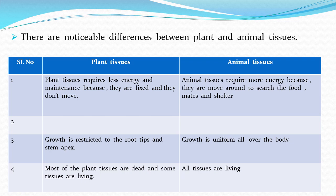Plant tissues require less cell energy and maintenance compared to animal tissues. This is because plants are fixed to one position and do not move. Growth in plants is restricted only to the roots and stem. Moreover, most plant tissues have dead cells, with only some tissues being living.